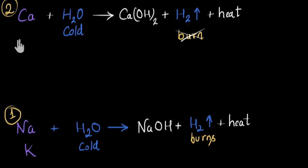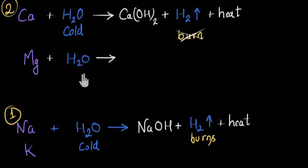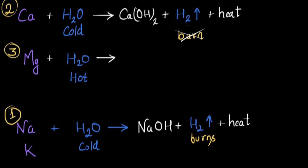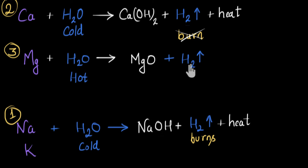Next, magnesium also reacts with water, but it cannot react with cold water — cold water does not have sufficient energy. So we need to heat the water; magnesium reacts only with hot water. This itself indicates that magnesium is not as reactive as calcium, so we rank magnesium third. In this reaction, magnesium displaces hydrogen and reacts with oxygen to form magnesium oxide, and hydrogen gas is given off. Magnesium oxide is soluble in water, so we finally get magnesium hydroxide.